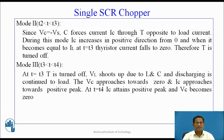Mode 2: t > T2, less than T3. Since Vc = -Vs, C forces the current through T in the opposite direction of the load current. During this mode, the charging current increases in the positive direction from 0, and when it becomes equal to Il at t=T3, thyristor current falls to 0. Therefore, the main power device T is turned off.